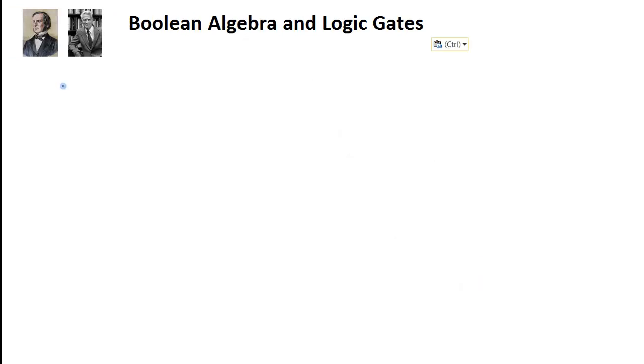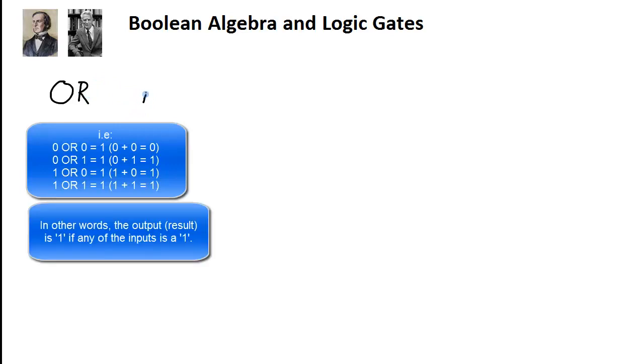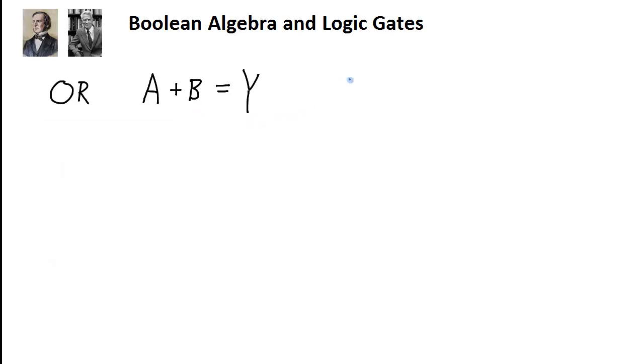The second basic Boolean algebra operation is called the OR operation, and this is sort of a digital addition. The OR operation, when written out in Boolean algebra form, looks like this: A plus B, or A or B, equals Y. In the case of the OR operation, the output Y is a 1 if either A is a 1, or B is a 1, or both A and B are 1.